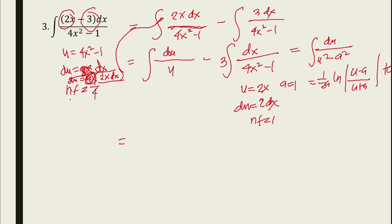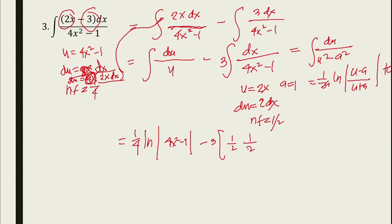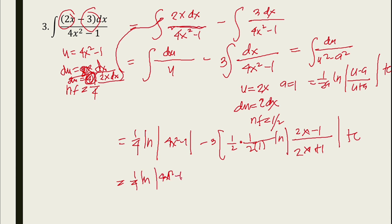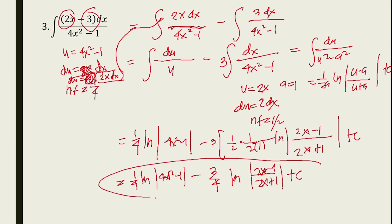Combining both parts: the neutralizing factor for the second integral is 1/2, and multiplied by 3 gives 3/4. The final answer is: (1/4) ln|4x squared minus 1| minus (3/4) ln|(2x minus 1)/(2x plus 1)| plus C.